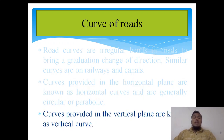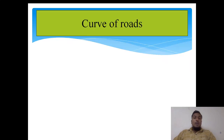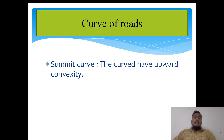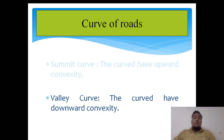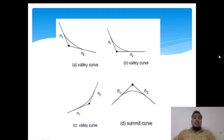The curves which are provided in the vertical plane are known as vertical curves. Vertical curves are necessary to provide at intersections on a vertical profile to give more strength to the roads. Summit curve refers to curves that have an upward convexity, and valley curve refers to curves that have a downward convexity. In this diagram, you can see the valley curve and the summit curve as per the definitions discussed.